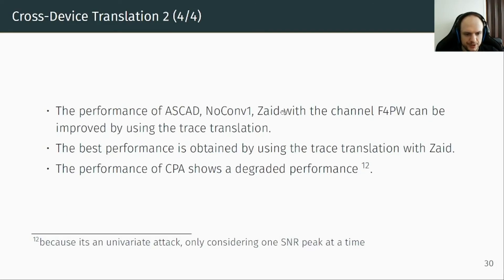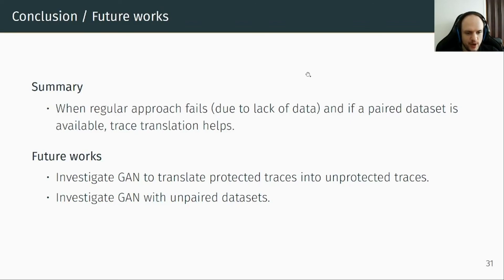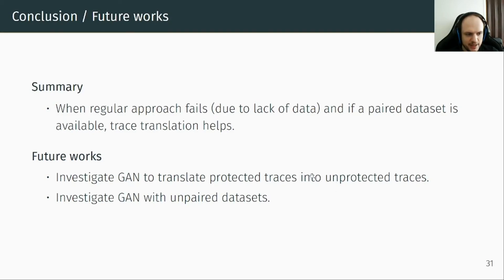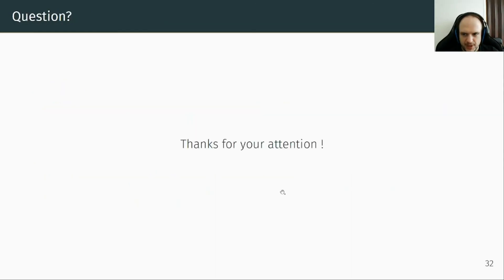This is the summary of the second cross-device translation. We conclude that when the regular approach fails due to a lack of data, and if paired datasets are available, trace translation helps. Our dataset and all scripts will be open-sourced soon. In future work, we want to investigate if a GAN can translate protected traces into unprotected traces, and also whether a GAN can work with unpaired datasets. Thank you for your attention.